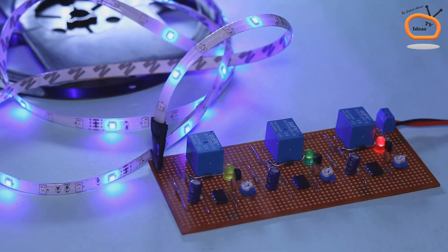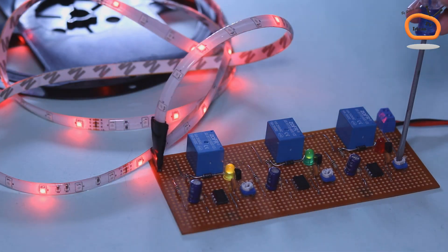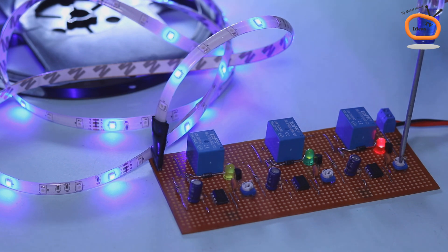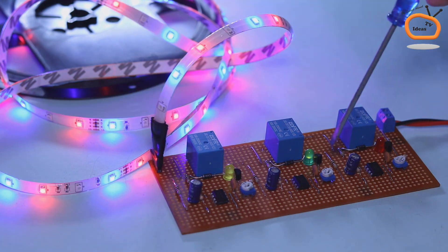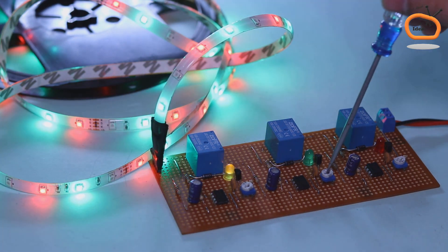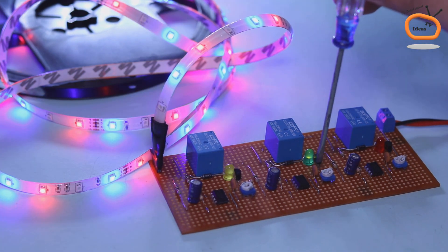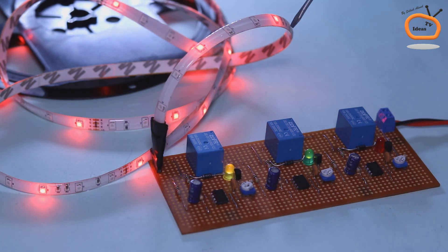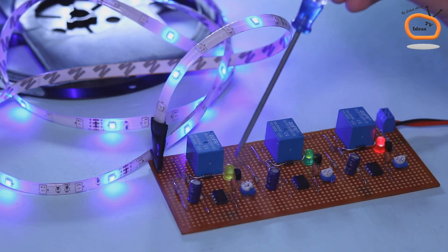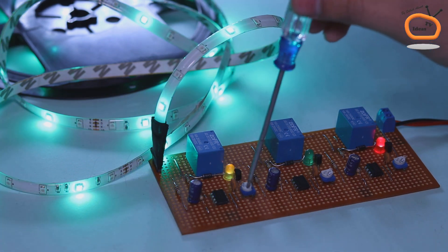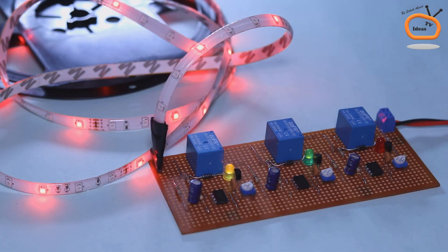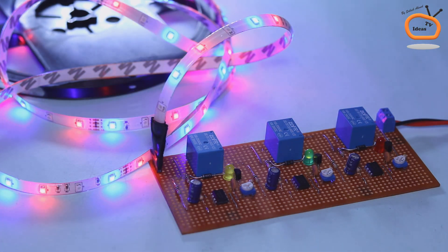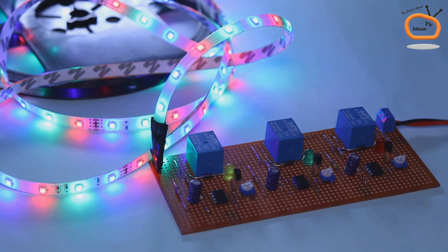You can customize the effects of RGB and adjust the blinking speed of each color in RGB by using these variable resistors. Each variable resistor represents different color in RGB. Turning the variable resistor anti-clockwise increases the delay, hence different combination of resistance by variable resistors creates different effects in RGB.